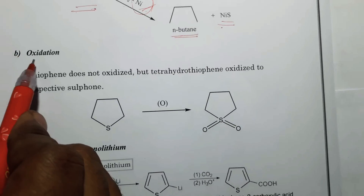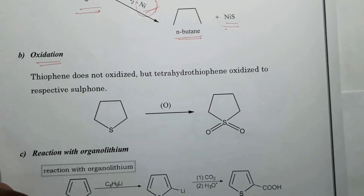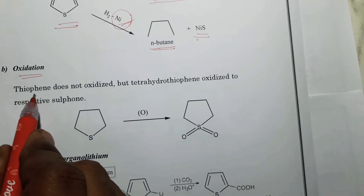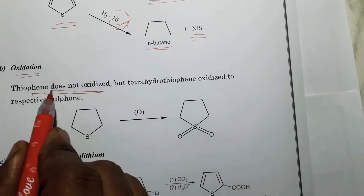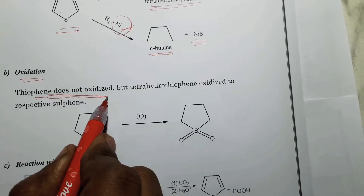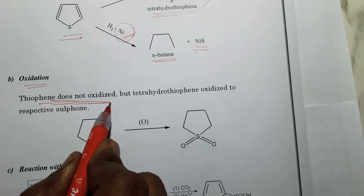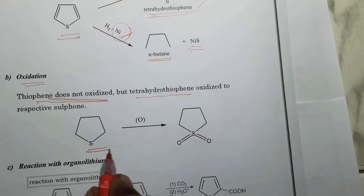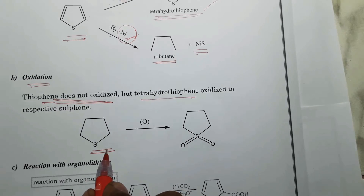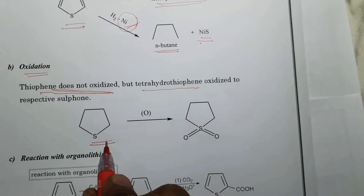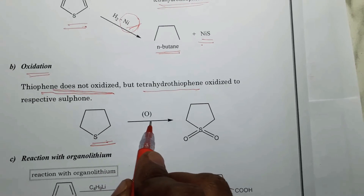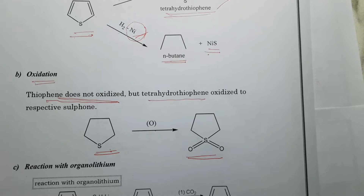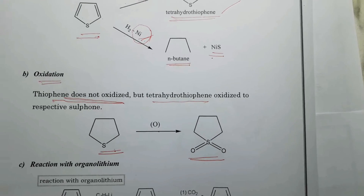Oxidation reaction of thiophene: in general, thiophene does not undergo oxidation reaction. But its reduced derivative, tetrahydrothiophene, undergoes oxidation and gives the respective sulfone derivative.